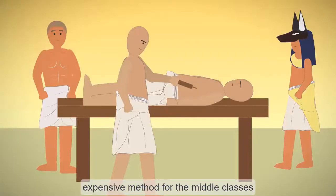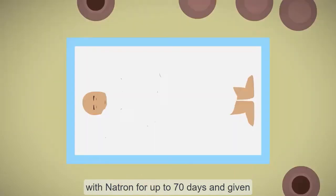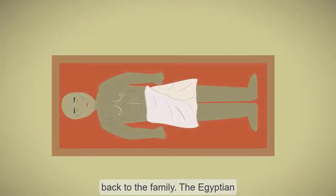The less expensive method for the middle classes, or those who wished to avoid the expense, involved the corpse being injected with oil taken from cedar trees, liquefying the internal organs. It was then packed with natron for up to 70 days and given back to the family.